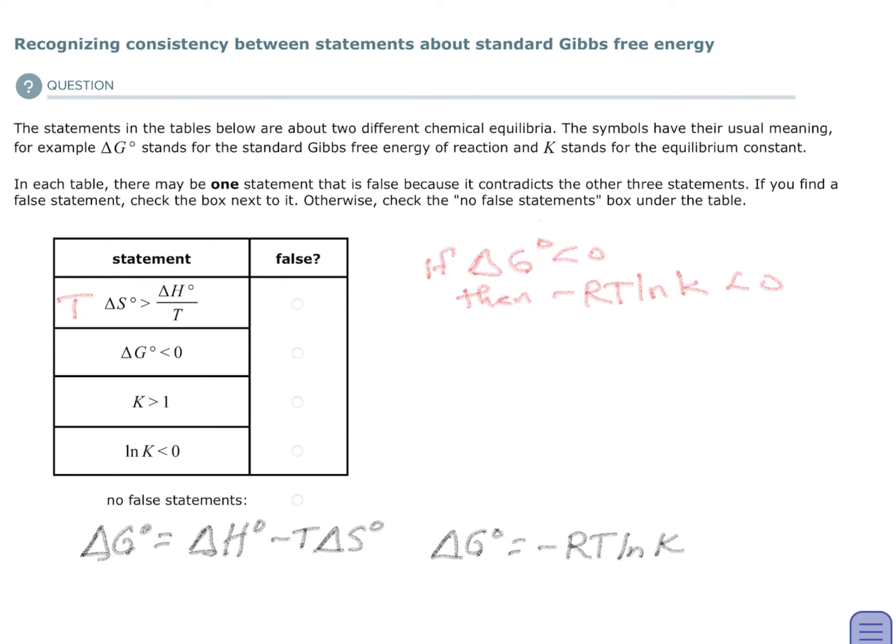If Gibbs free energy is less than zero, then negative RT natural log of K is less than zero. I threw out RT since they're constants, and so I say that the negative natural log of K is less than zero. And then I have to remind myself, because I'm not really good at these natural logs, that if K is one, then the natural log of K is zero.